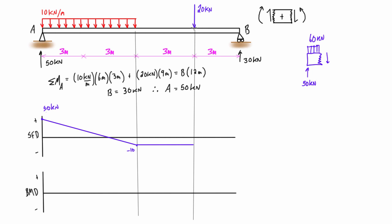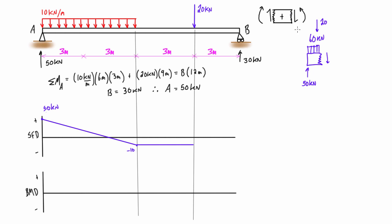Just to the right of the next marker we add the 20 kilonewton point load pressing down. Our free body diagram now extends from A to just past that section: 80 kilonewtons total going down and 50 going up, so the shear force must be 30 kilonewtons pressing up — which is opposite to the sign convention — making it negative 30 kilonewtons, landing us down there at negative 30.